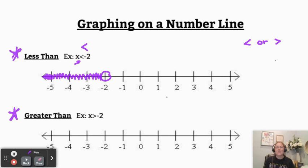Greater than. So x is greater than negative 2 here. Again, because we have a less than or a greater than, we're going to put an open circle there at negative 2.